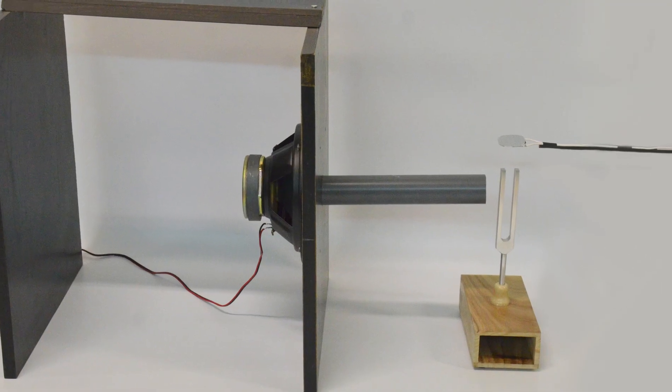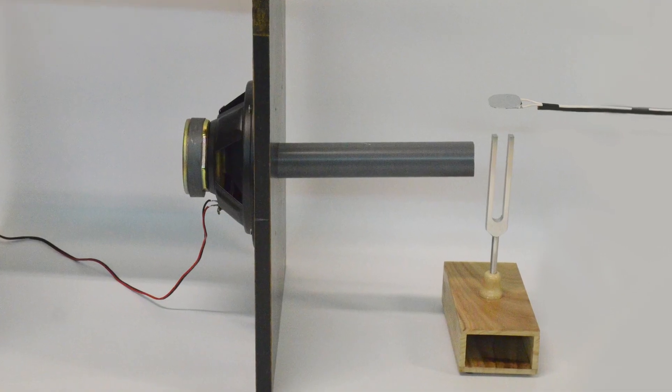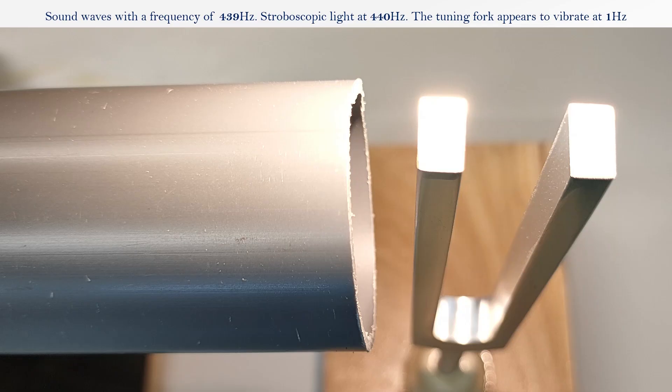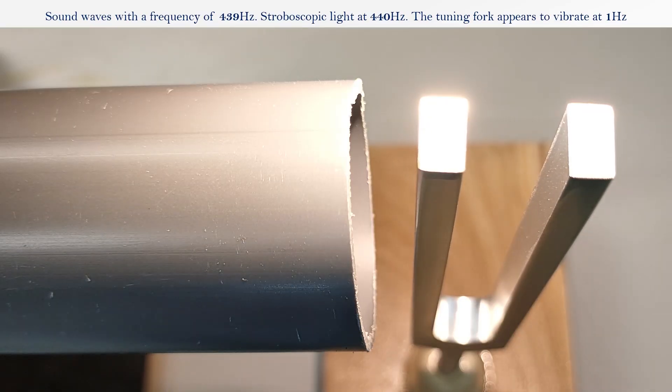The tuning fork can also be stimulated using sound waves. In this case, the frequency of the sound waves must be equal to the natural frequency of the tuning fork. The stimulation of the tuning fork is based on resonance and corresponds to the excitation of the RLC circuit with a sinusoidal source.